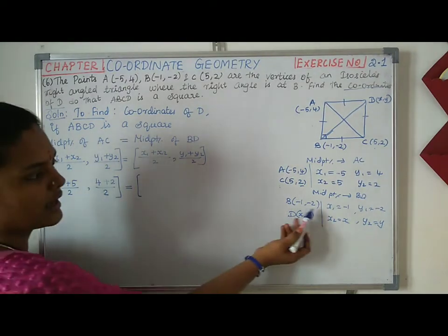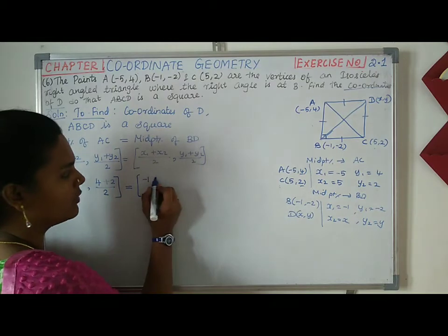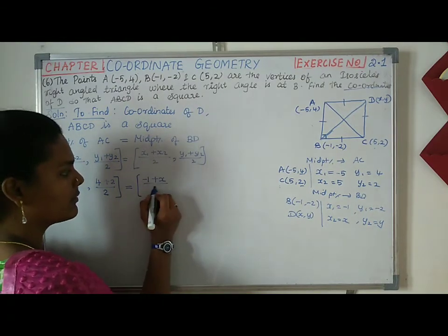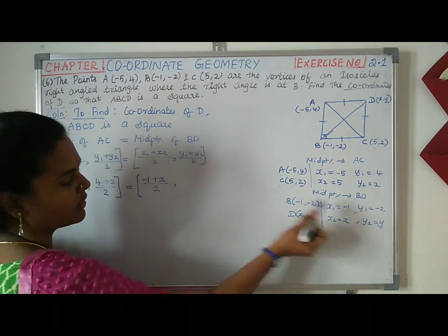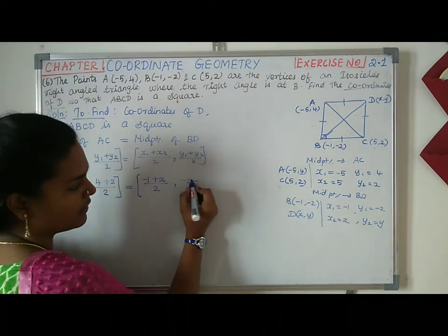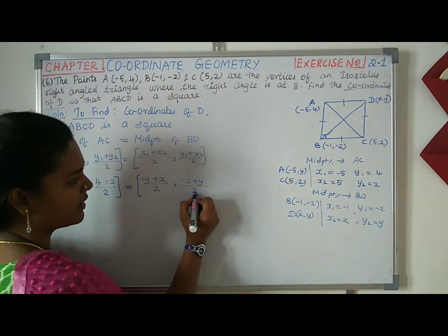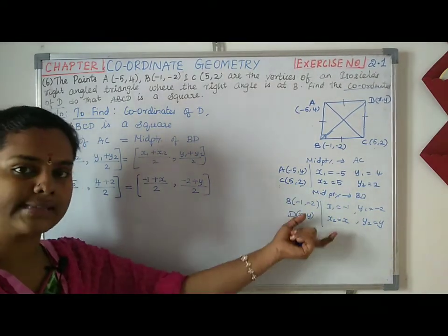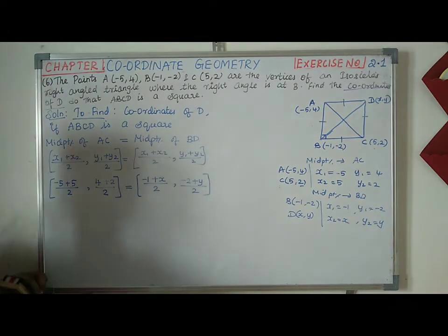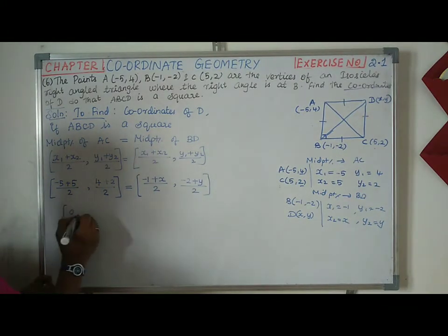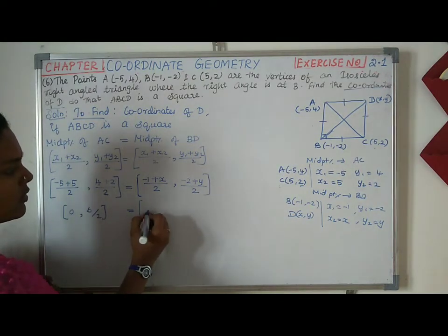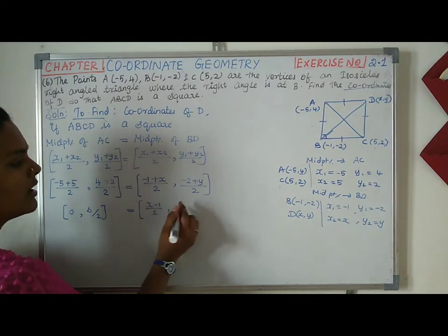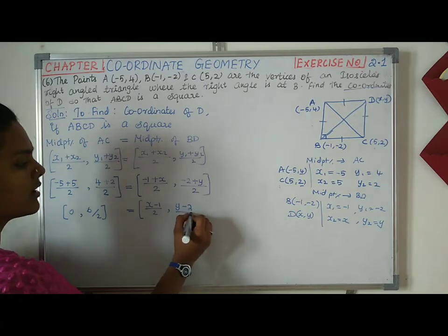BD is the value of BD, minus 1. x2 is the value of 1, x1 is the value of 1 divided by 2. 5 is the value of 1 divided by 2. This step is the 9th main point of the value of 1 divided by 2. Now we have to press the value: 0, 4 plus 2, 6 divided by 2. This is equal to x minus 1 divided by 2, minus 2, and y minus 2 divided by 2.